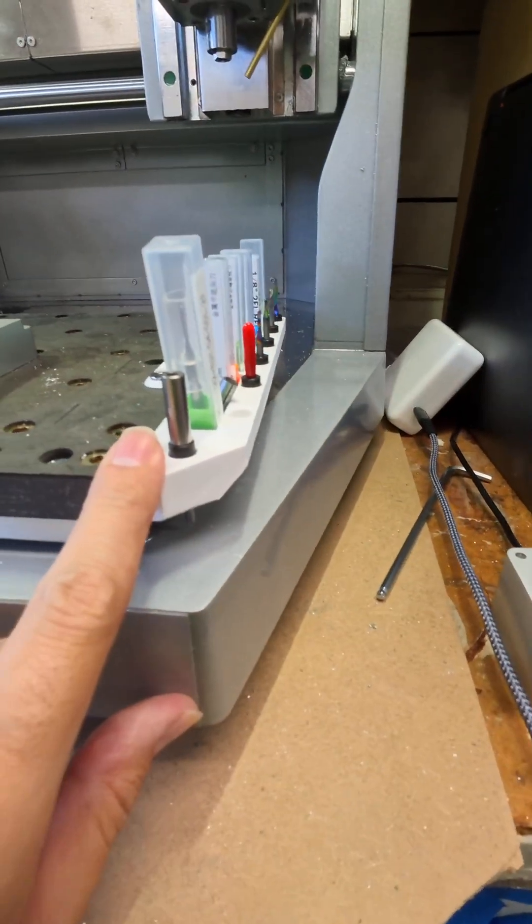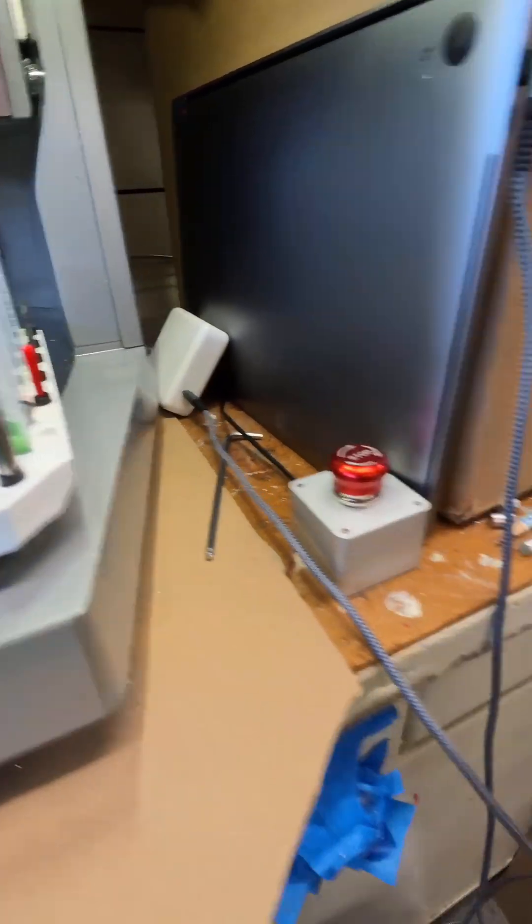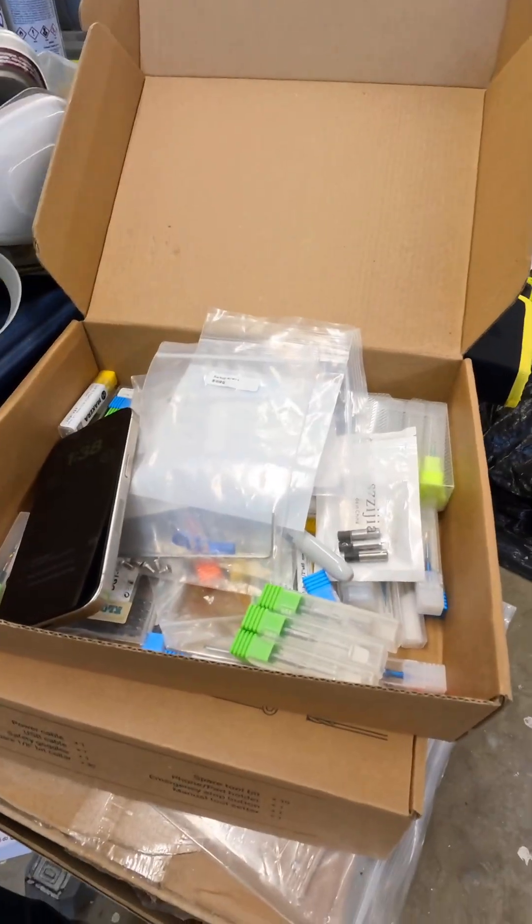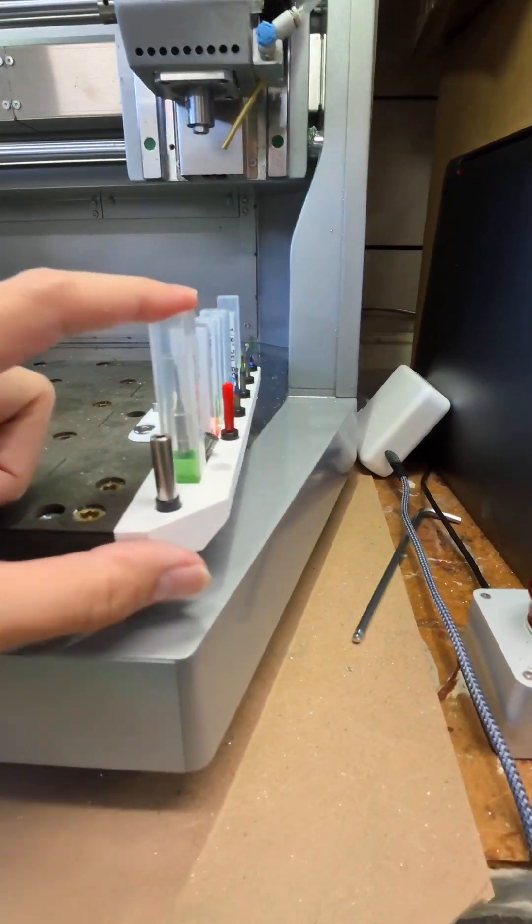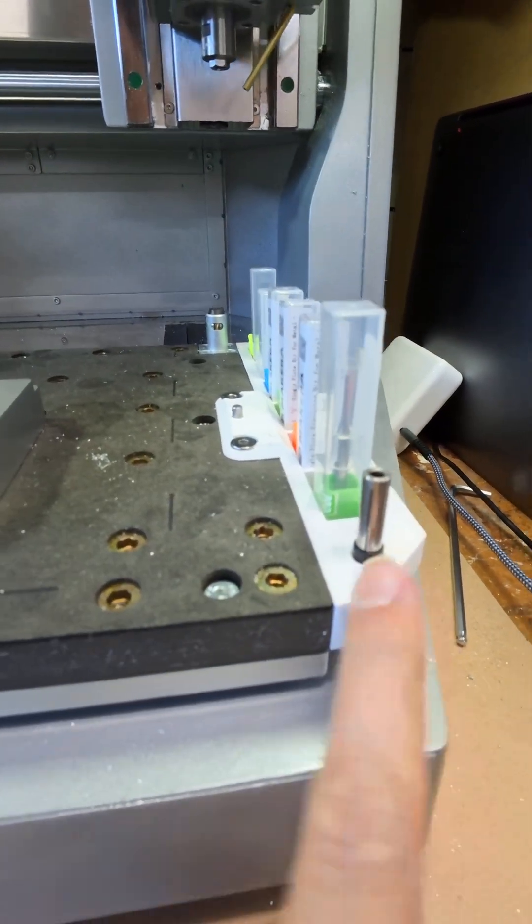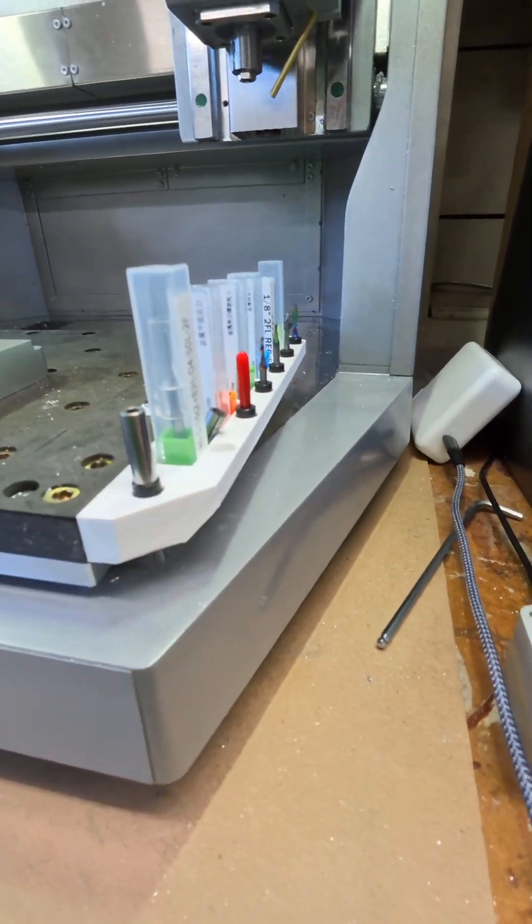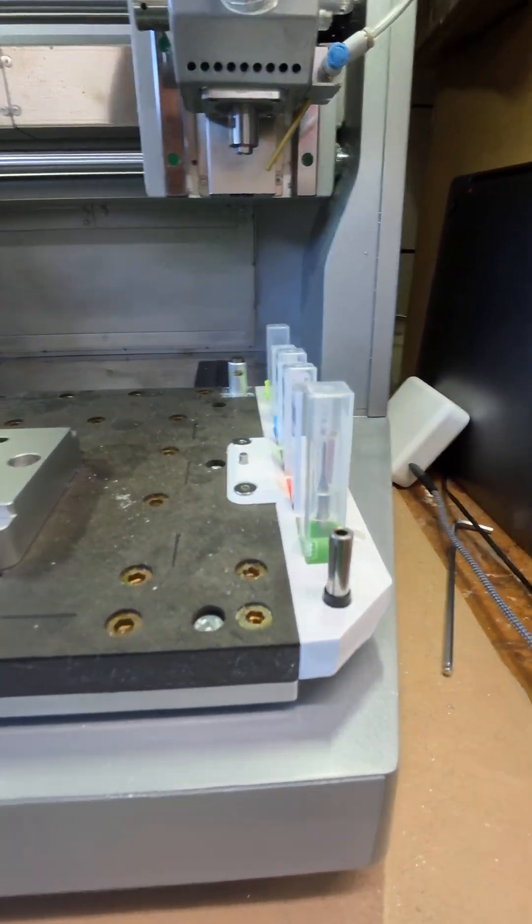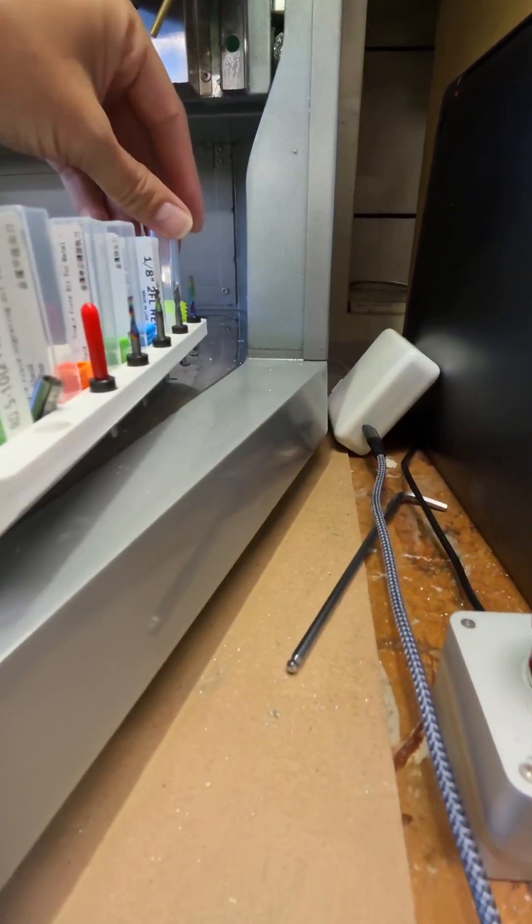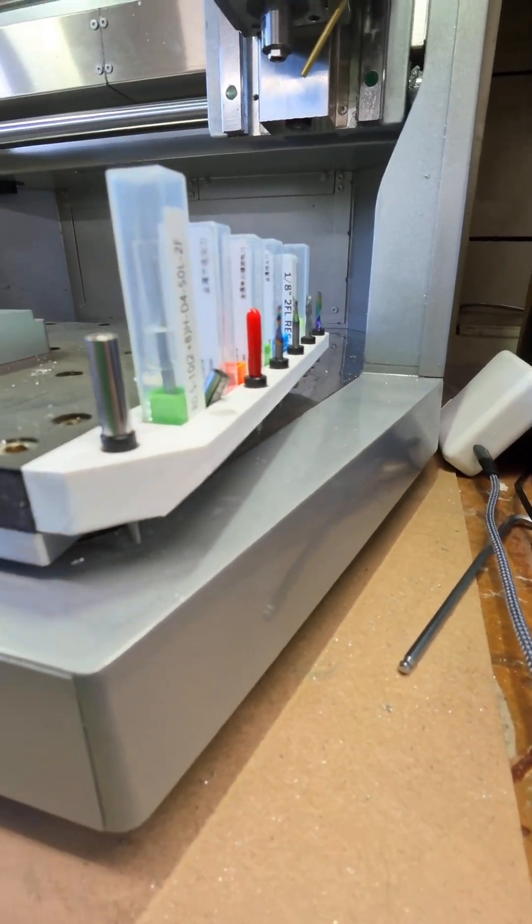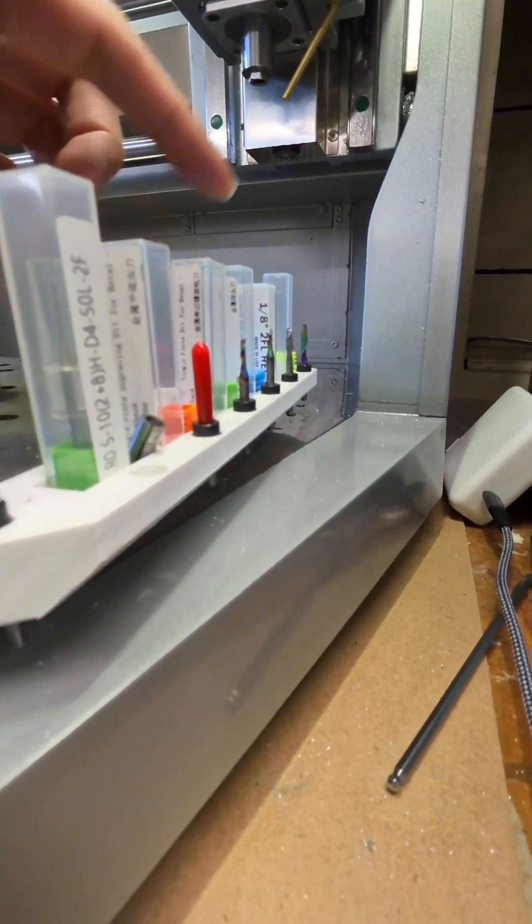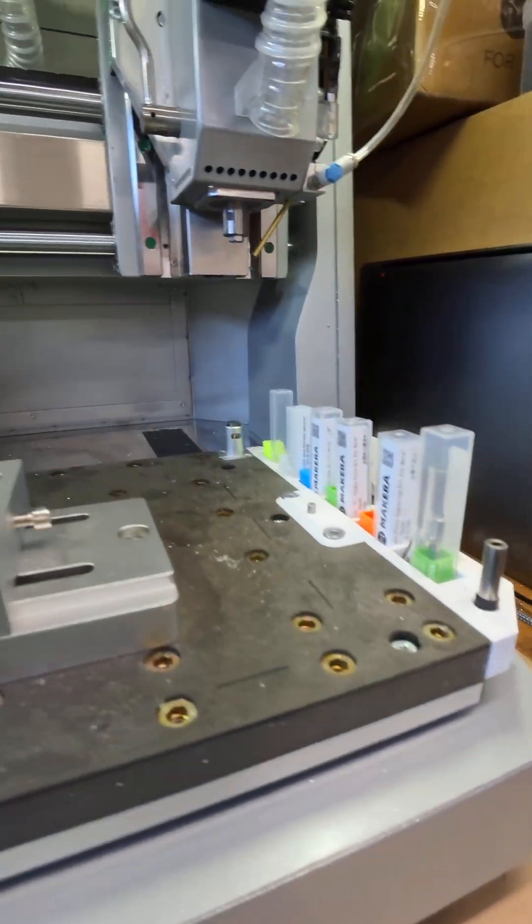And then this is a tool holder. I have a box of tools. I just designed this real quick and then you can print it out, stick it on there and hold all your tools so that they don't get lost. It also holds all the capsules so that they're basically labels, one through six.